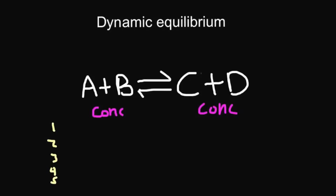Let's look at an example. Initially, I've got 100 moles per decimetre cubed of A and 0 moles per decimetre cubed of C. After 2 minutes — it's quite a fast reaction — I end up with 40 of A and 60 of C. After 3 minutes, it reaches dynamic equilibrium, which is 10 moles per decimetre cubed of A and 90 moles per decimetre cubed of C.